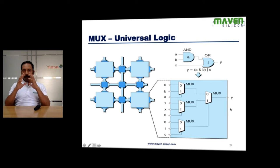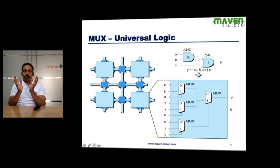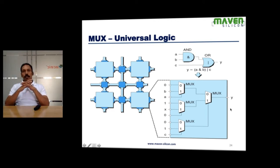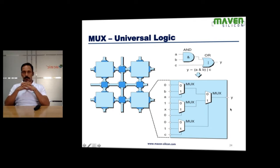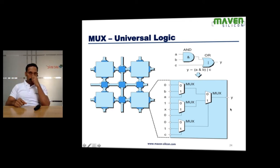Why do we really need to understand this concept? How can we use a multiplexer as universal logic, and why is this really needed? Fundamentally, if you look at it, there are two kinds of chips: ASIC and FPGA. This is what we discussed during the introduction class — the VLSI introduction. ASIC means application-specific integrated circuit, and FPGA means field programmable gate arrays.